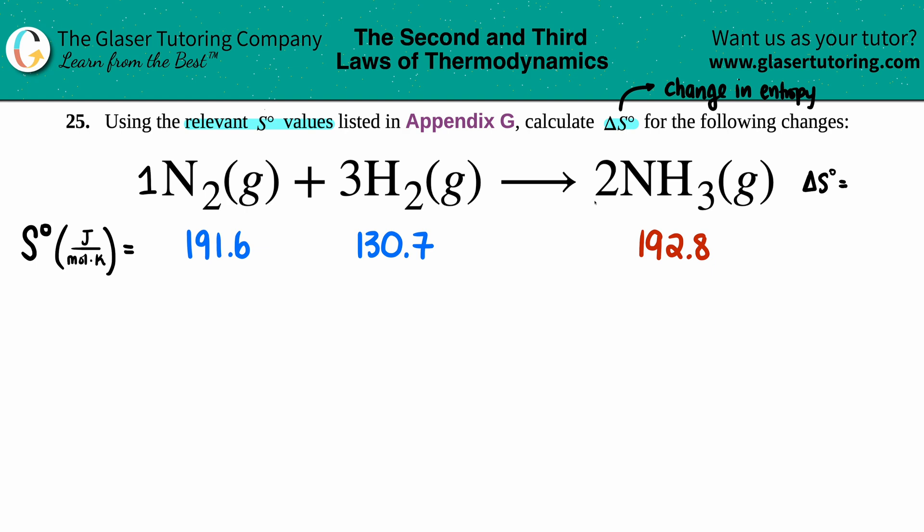So we're going from four moles of gas, which is more, to two moles. So we're basically bringing down the entropy. The more gas you have, the more random the container is going to be. So in this case we could probably guesstimate that this would be a negative value because we went from a high number of moles of gas to a lower number.